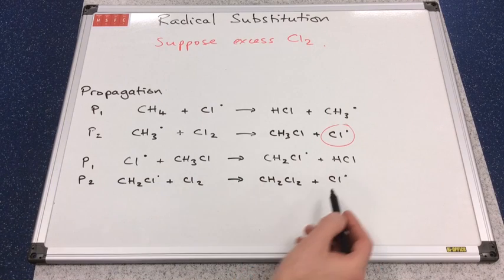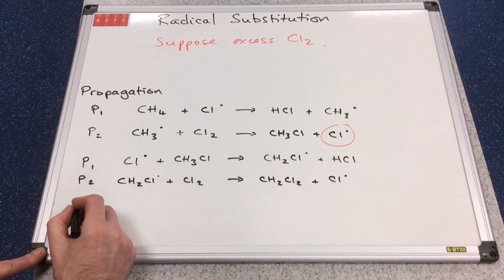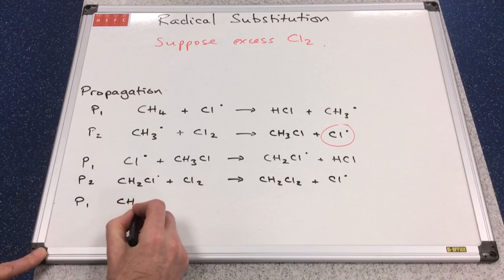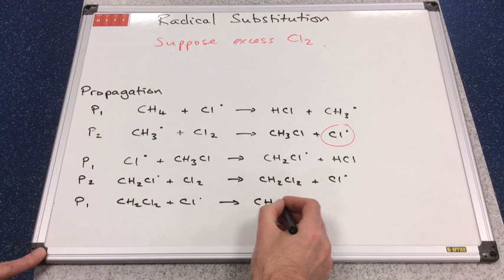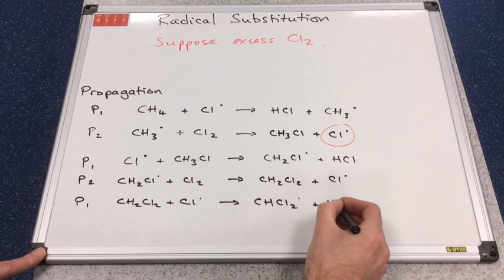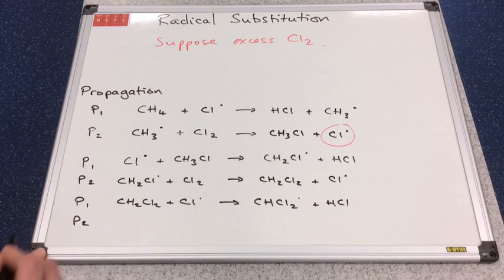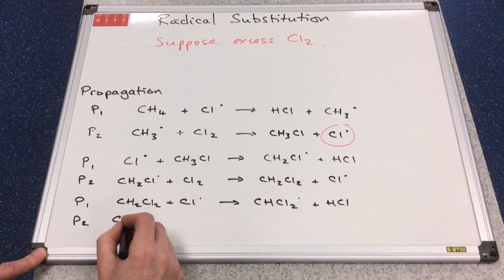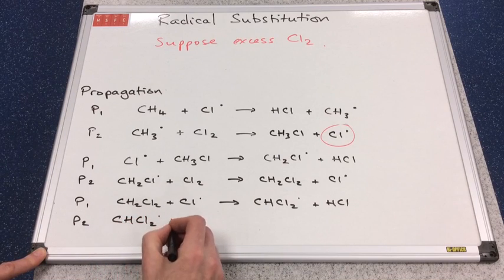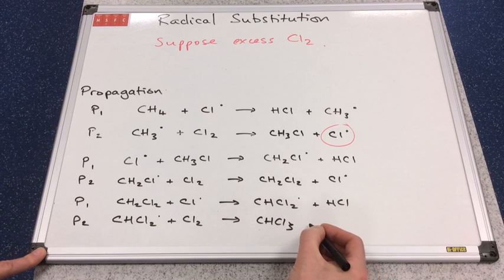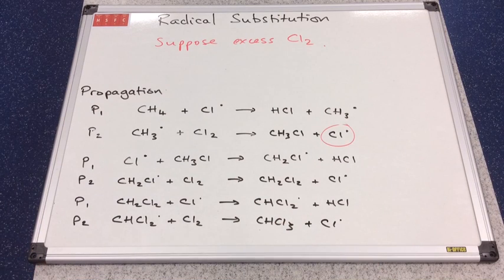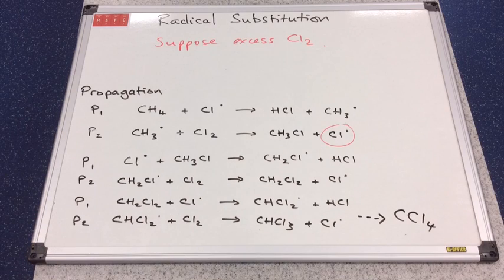If excess chlorine is still present, another pair of steps occurs: the chlorine radical strips a hydrogen from CH₂Cl₂ to give a CHCl₂ radical and HCl. The CHCl₂ radical then reacts with stable Cl₂ to produce CHCl₃ and another chlorine radical. This process keeps going through further pairs of steps until ultimately CCl₄ is produced, at which point it stops because there are no more hydrogens left for the chlorine radicals to remove.